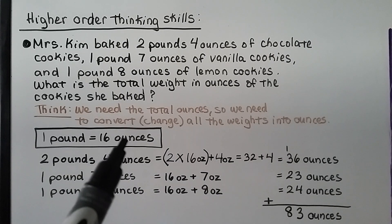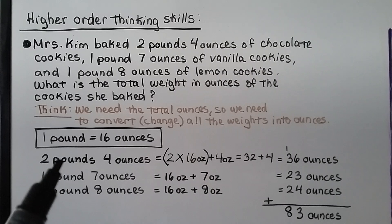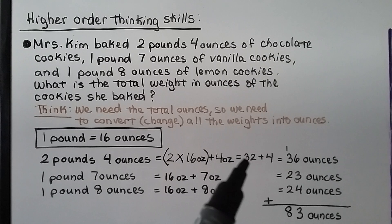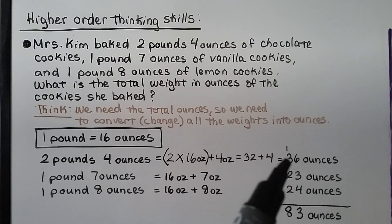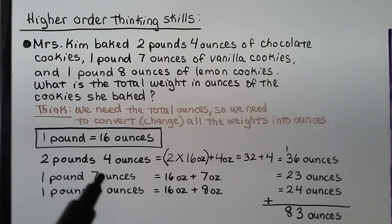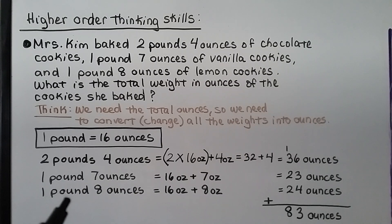Two pounds four ounces of chocolate cookies: 2 × 16 = 32 ounces, plus 4 ounces = 36 ounces. One pound seven ounces of vanilla cookies: 16 + 7 = 23 ounces. One pound eight ounces of lemon cookies: 16 + 8 = 24 ounces.